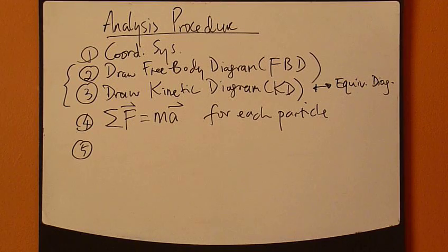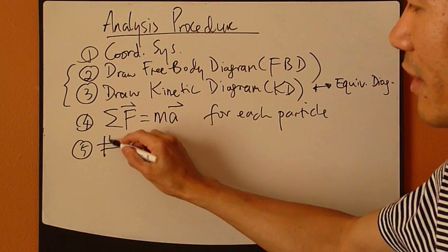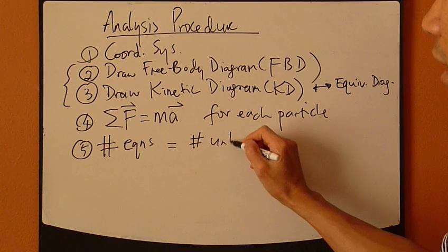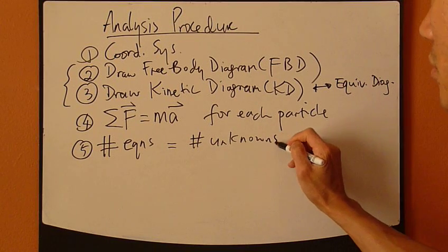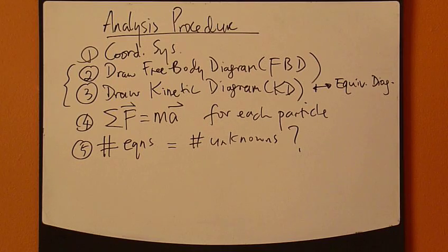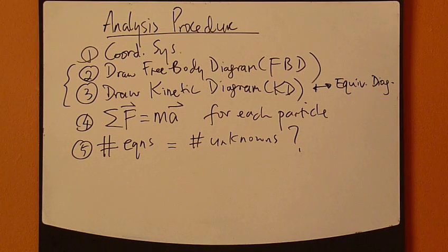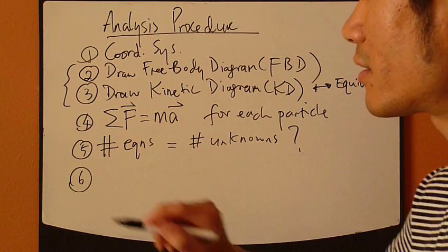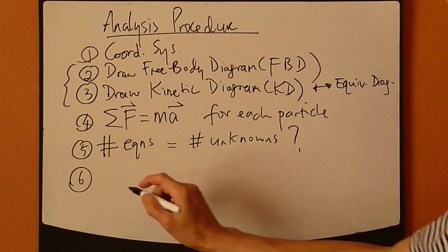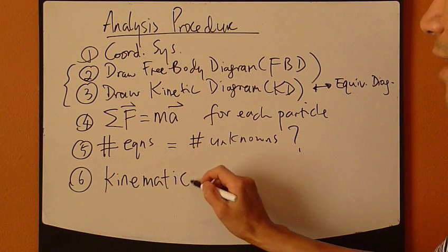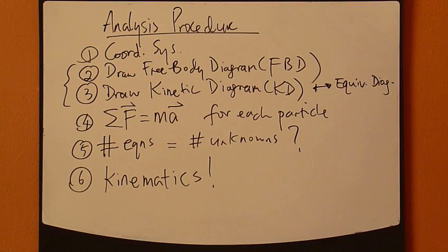Next, you count whether or not the number of equations equals the number of unknowns. Now, if you have more unknowns, then mathematically, you need more equations, right? That's where the sixth step comes in. And where does the equation come from? Well, last chapters. You bring in kinematics.